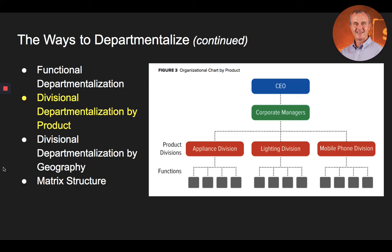Within these separate divisions, a set of support functions exists to service each product or product line. The strengths of divisional departmentalization include increased control over outputs, internal divisional cooperation, and environmental responsiveness. Additionally, the divisional structure allows organizations to identify and focus on profitable units while discontinuing non-profitable ones. Some disadvantages of a product structure include no functional economies of scale, decreased coordination and communication between divisions, loyalty to separate divisions instead of to the overall organization, and standardization across product lines becomes virtually impossible. Organizations that perform effectively with a strict divisional structure tend to have large product lines while operating in highly uncertain, unstable environments.